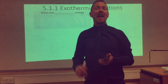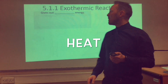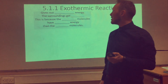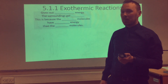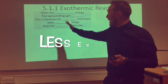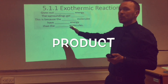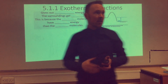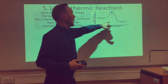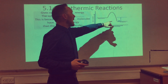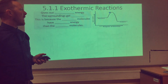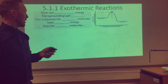You've got to know an exothermic reaction gives out heat energy — that means the surroundings get hotter. We can see from this graph that the reactant particles have more energy than the product particles, so energy is given out in the reaction.